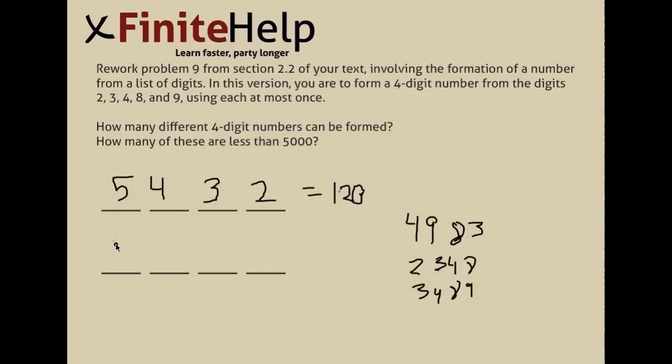So what you can take from that is that you know your first number has to be either 2, 3, or 4, and there's only three of them. So you can just put a 3 in for your first slot. And that represents any of those three numbers, 2, 3, and 4.